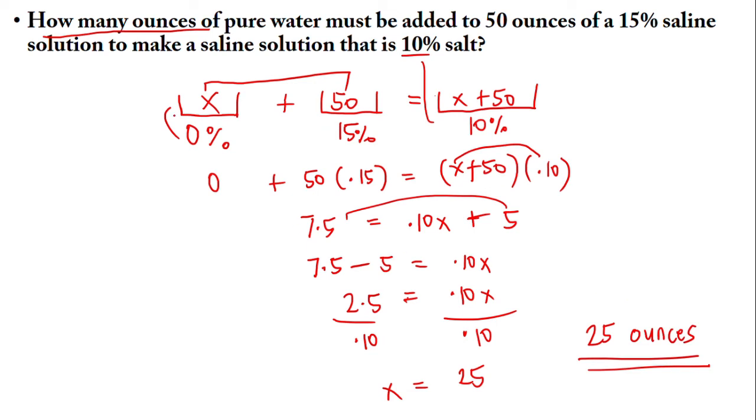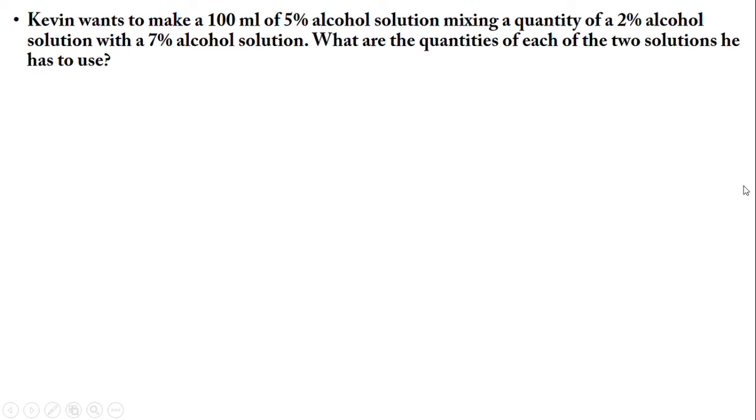Next problem. Kevin wants to make 100 ml of 5% alcohol solution mixing a quantity of a 2% alcohol solution with a 7% alcohol solution. What are the quantities of each of the two solutions he has to use?